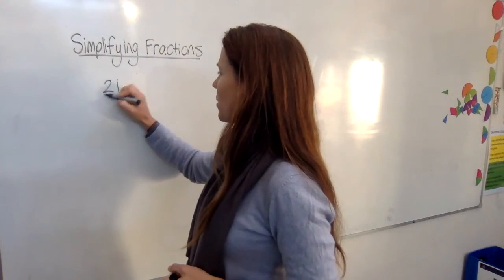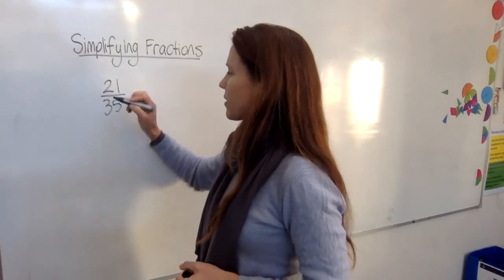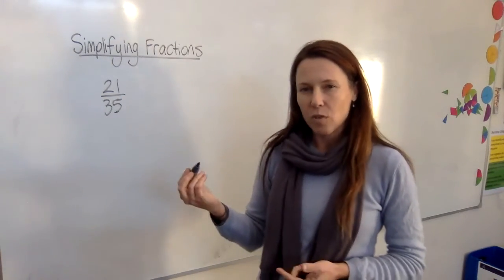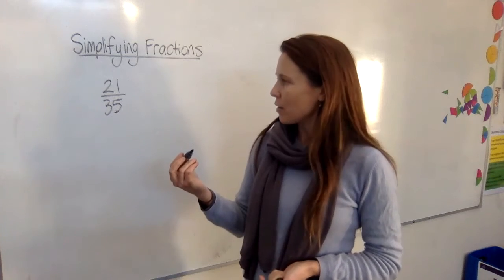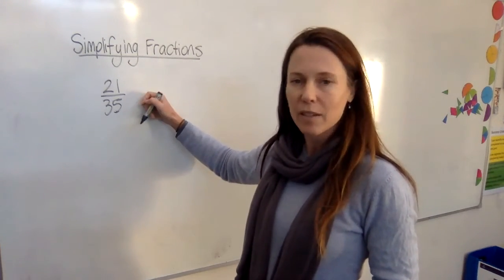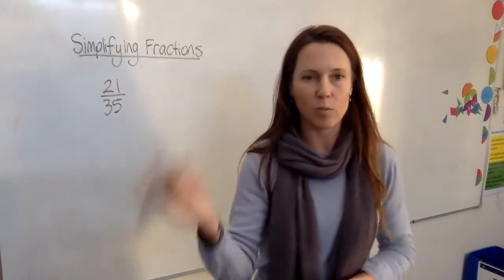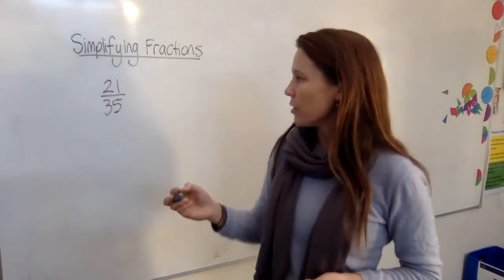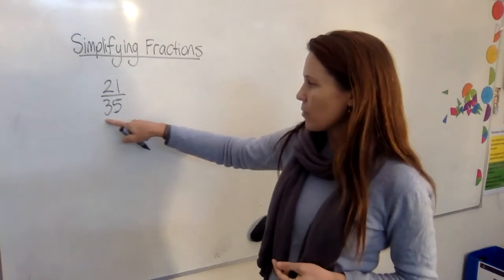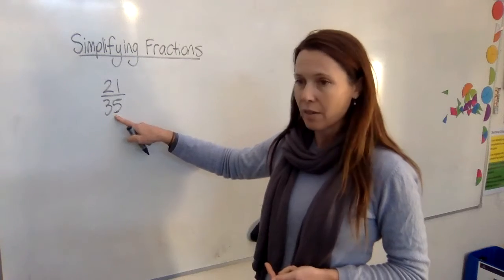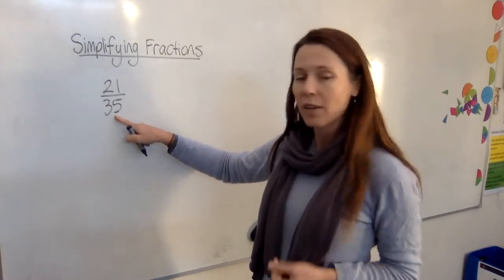Let's take a number like 21 and 35ths and make it as simple as it can be. All right. Do we need to write down all the factors or can we just think them? We can probably think them through because there's less factors in these numbers, aren't there? Think of 21. It's got 1 times 21 and it's got 3 times 7. So just think through. Is 21 a factor of 35? Nope. Is 7 a factor of 35? Yes, it is. 7 fives are 35.